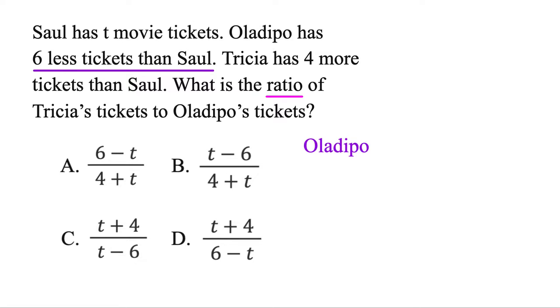Because Oladipo, now when you see six less, it's always minus six at the end. And then Sol is T, so it's going to have to be T minus six. And then Tricia, she's four more than Sol. But once again Sol is T, so it's going to be four plus T, or T plus four. So that's what Tricia's got.